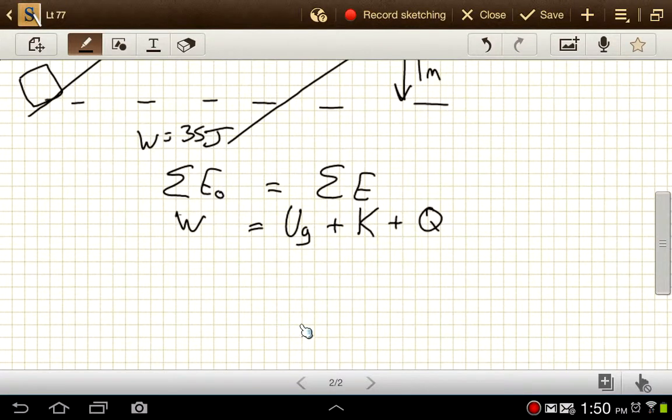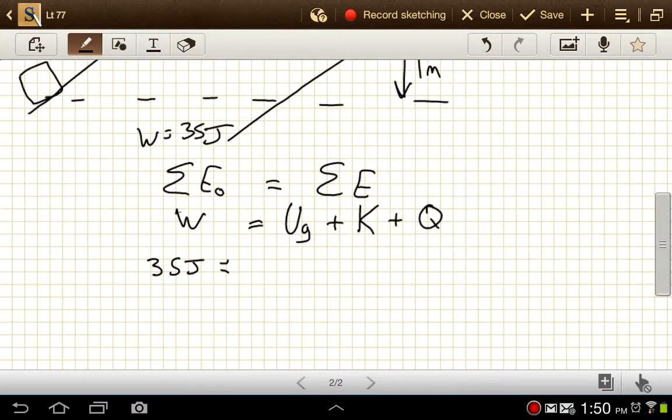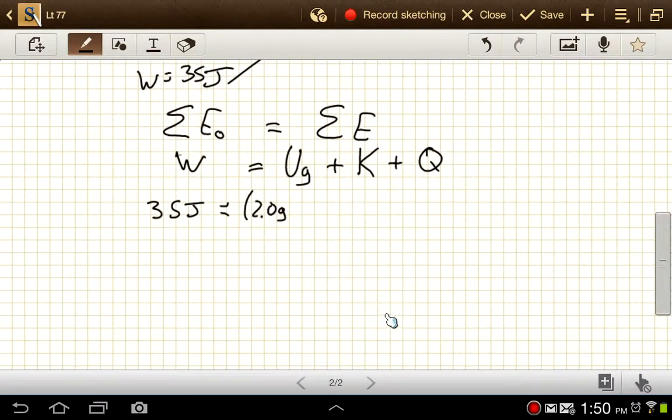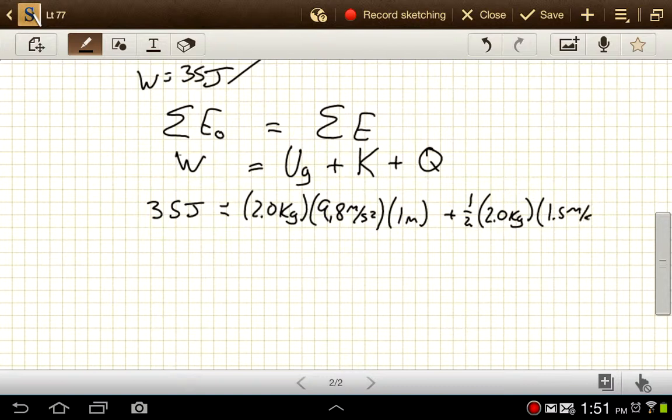So the amount of work here was 35 joules. Potential energy from gravity is mass times gravity times height. So our mass was 2 kilograms times the acceleration of gravity, 9.8 meters per second squared times the height, 1 meter, plus kinetic energy is 1 half mass times the velocity squared, plus some amount of heat, Q.